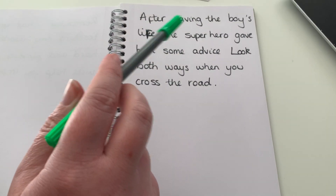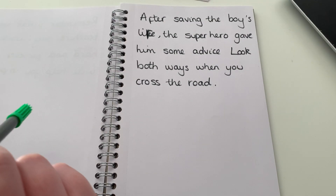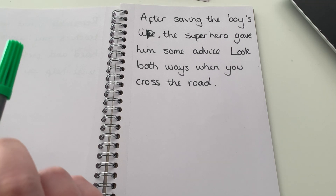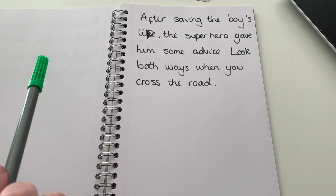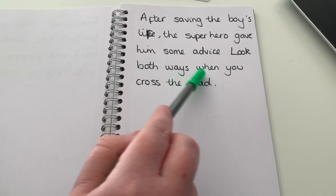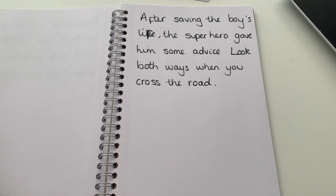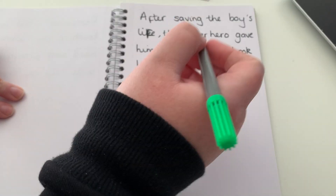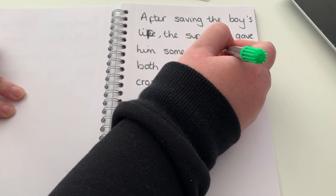So: 'After saving the boy's life, the superhero gave him some advice: look both ways when you cross the road.' The advice — 'look both ways when you cross the road' — is the thing I'm going to expand on in the second clause, because that is the quotation, what the superhero is actually saying to the boy. So I need my colon to come after the word 'advice'.